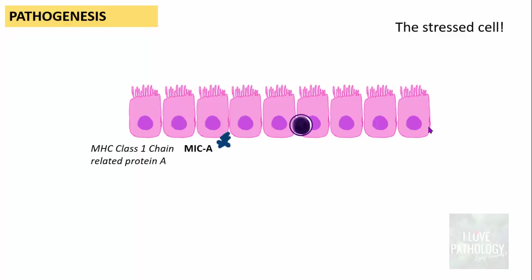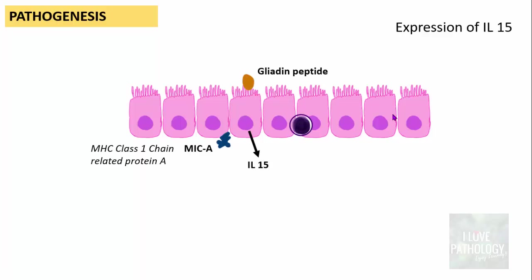At the cellular level, whenever the cell is stressed due to trigger factors, the stressed cells express the antigen MICA — MHC class 1 chain-related protein A. This represents normal intestinal epithelium with microvilli and occasional intra-epithelial lymphocytes. When the person consumes gluten, it is digested in the intestinal lumen, releasing gliadin. This gliadin interacts with intestinal epithelial cells and stimulates them to produce interleukin-15.